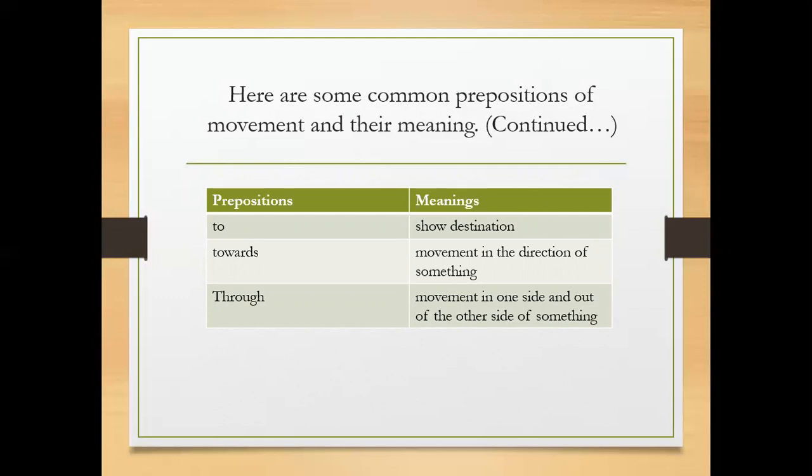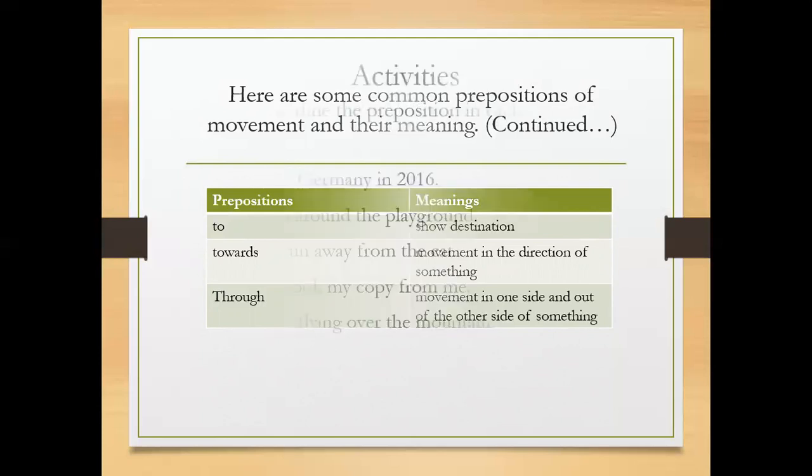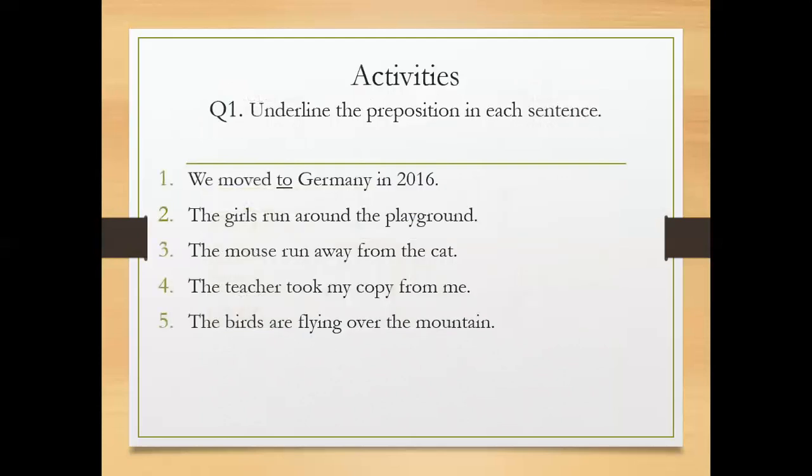The next word is 'through' - movement in one side and out of the other side of something. You just went through a red light. So here you saw some prepositions and their meanings. Now come to the activities. You have to underline the prepositions in each sentence.